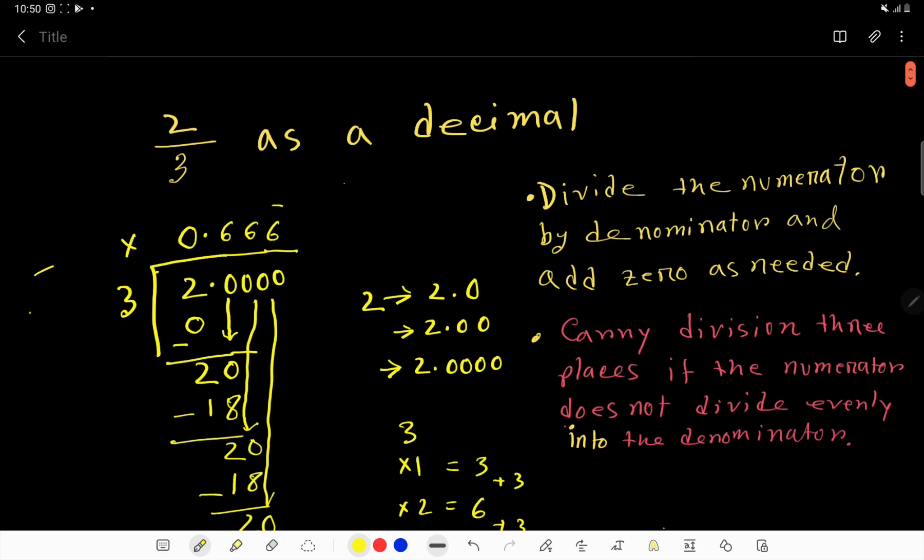So, 2 by 3 as a decimal will be 0.666 bar or 0.666 dot dot dot.